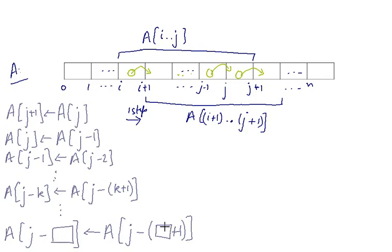So now we have to find the value of this box. It is very obvious that j minus the box will be equal to i+1. So we can write j-□ = i+1, and from here we get that the value of the box is j-i+1. Now that we have the range of values of k, that is k = -1 to j-i+1.